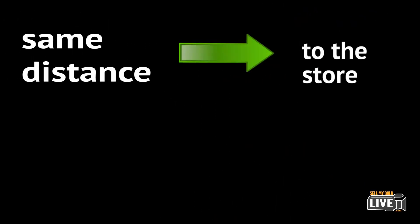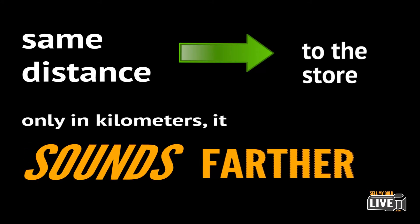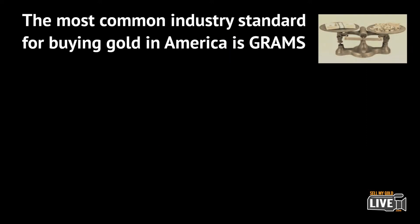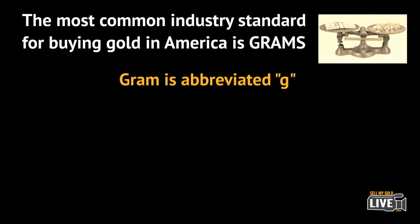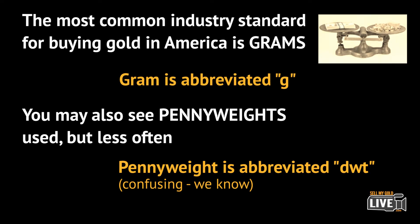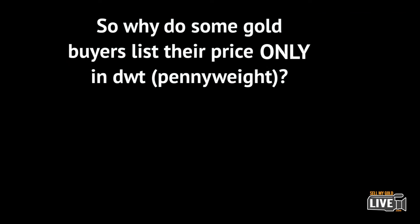The distance to the store is of course the same; only when you say it in kilometers it sounds farther. Now in America, the industry standard for buying gold is to be measured in grams, abbreviated with just the letter G. You may also find penny weights used instead of grams — penny weights are abbreviated DWT.